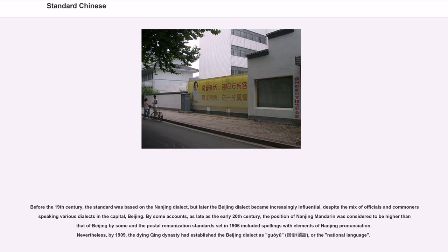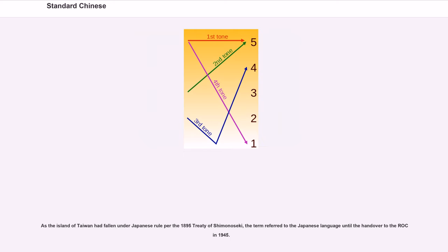Nevertheless, by 1909 the Qing dynasty had established the Beijing dialect as Guoyu, or the national language. As the island of Taiwan had fallen under Japanese rule per the 1895 Treaty of Shimonoseki, the term referred to the Japanese language until the handover to the ROC in 1945.